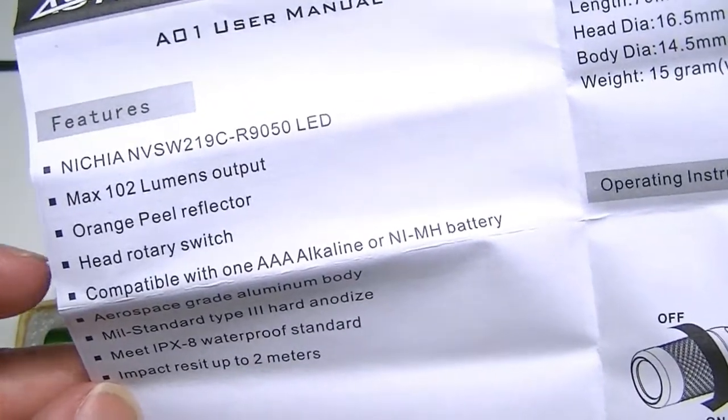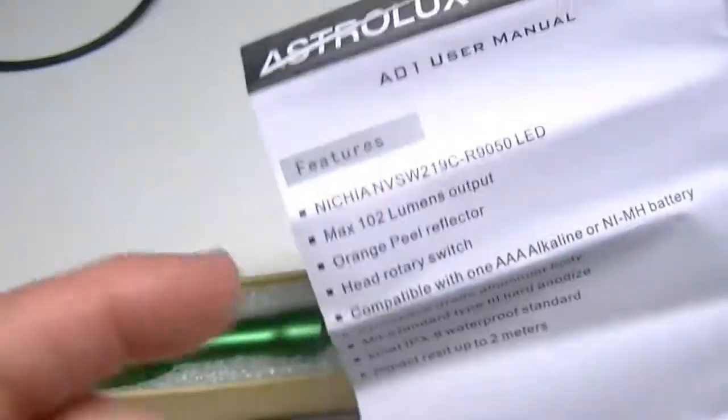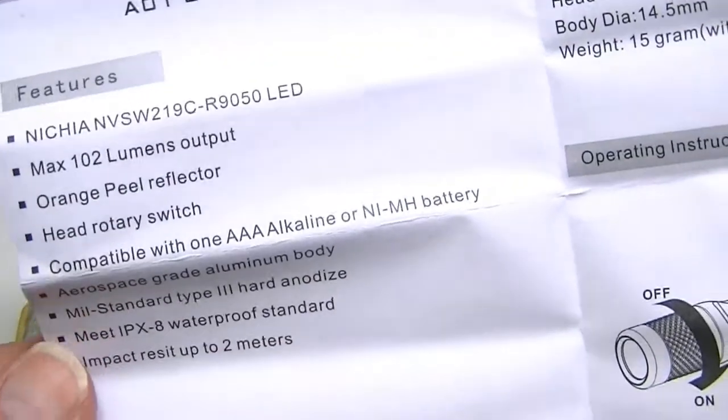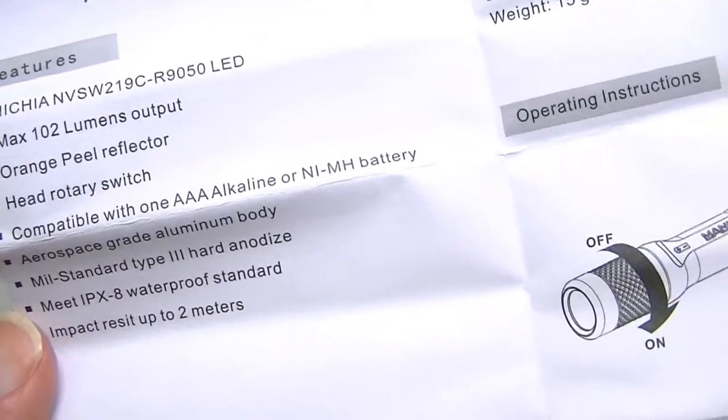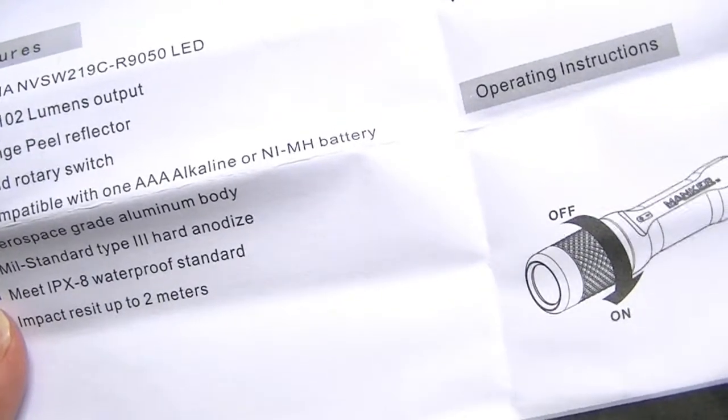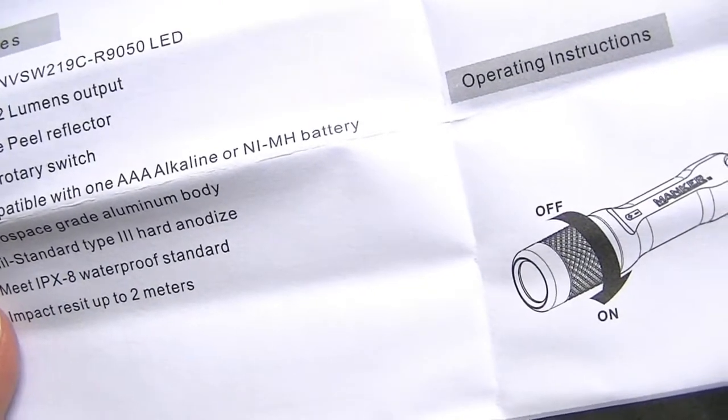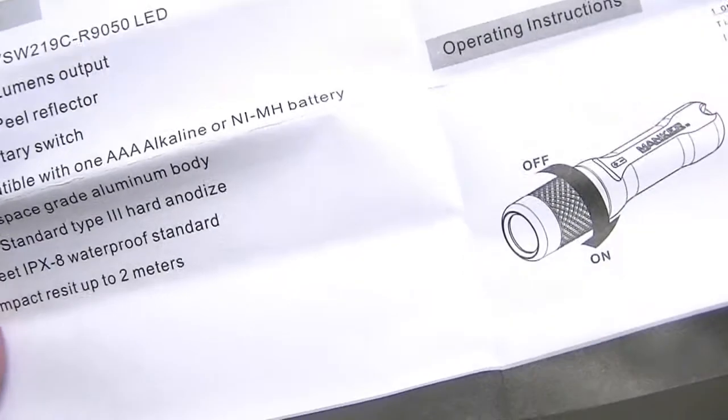102 lumens, has an orange peel reflector, and it turns on by twisting the head back and forth. It runs with one AAA battery, and you can use alkaline or NiMH rechargeable.